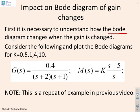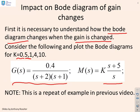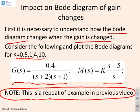We'll start with an example showing how the Bode diagram changes when the gain is changed. We use G(s) = 0.4 / [(s+2)(s+1)], M(s) = k·(s+5)/s, with different values of k: 0.5, 1, 4, and 10. Note this is exactly the same example covered in video 6.